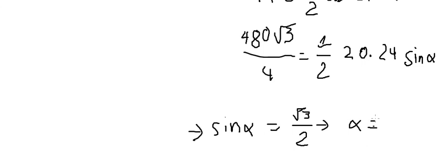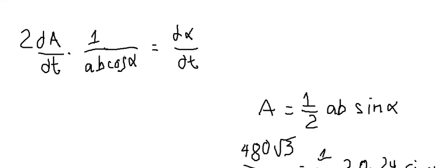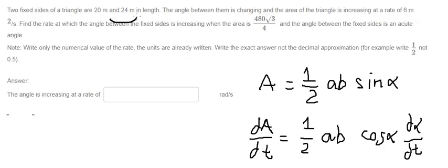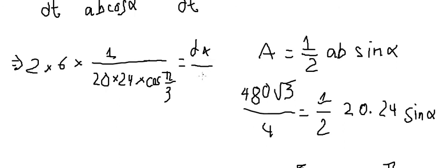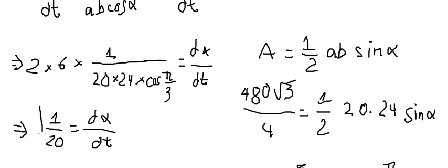So alpha equals pi over 3. Now we substitute everything: dA/dt equals 6, a times b equals 20 times 24, and cosine of pi over 3. Putting all numbers together, we get the final answer: dα/dt equals 1 over 20.